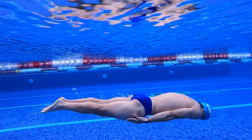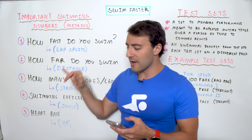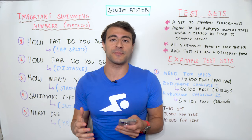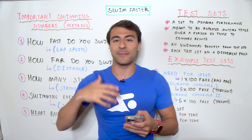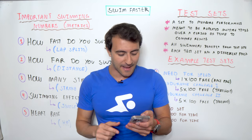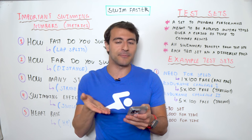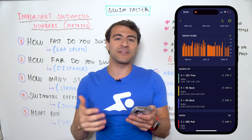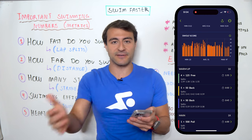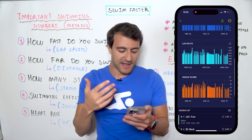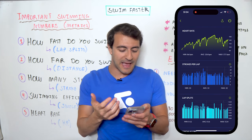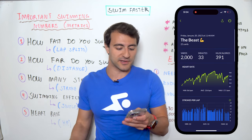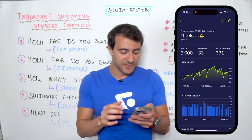The second metric is: how far do you swim? That's our distance. Some people count laps — you can call going there and back one lap. In this specific workout, 'The Beast,' it's a 2,000-yard workout. If I'm swimming in a 25-yard pool, that's 80 lengths of the pool, or 40 laps.